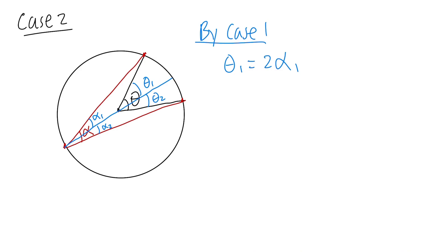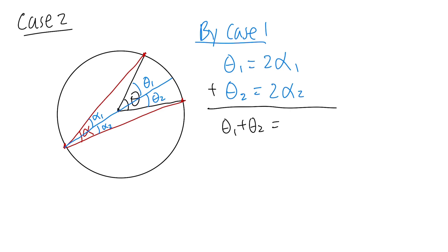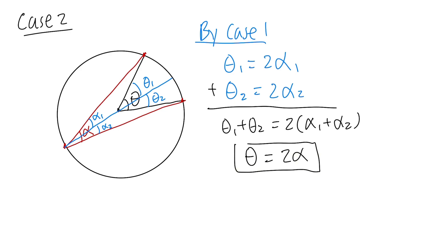By Case 1 applied to the diameter: theta 1 equals 2 times alpha 1, and theta 2 equals 2 times alpha 2. Adding these two equations: theta 1 plus theta 2 on the left equals 2 times (alpha 1 plus alpha 2) on the right. But theta 1 plus theta 2 is exactly our original angle theta, and alpha 1 plus alpha 2 is our original alpha, so theta equals 2 alpha. Case 2 is done.